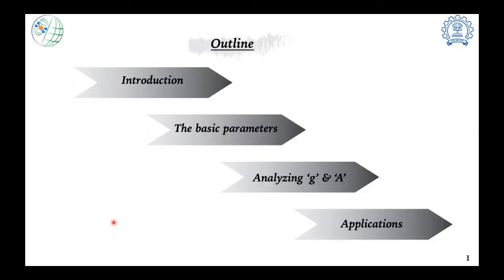This is the outline we will follow today. First, we will introduce a little bit of the history and background of EPR. Then we will discuss the basic parameters used to understand unpaired electron properties, focusing in detail on two: the G factor and the hyperfine splitting constant A. If time permits, we will look at some applications using these parameters to understand molecular structure.